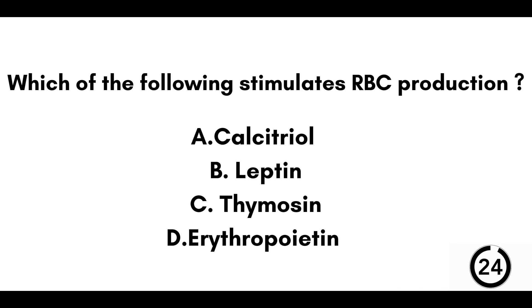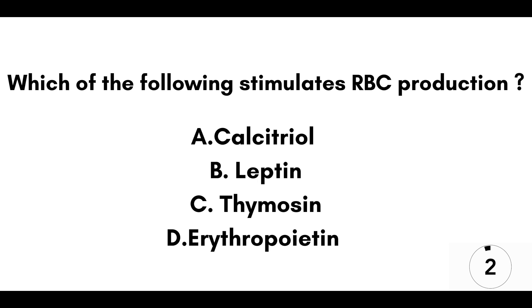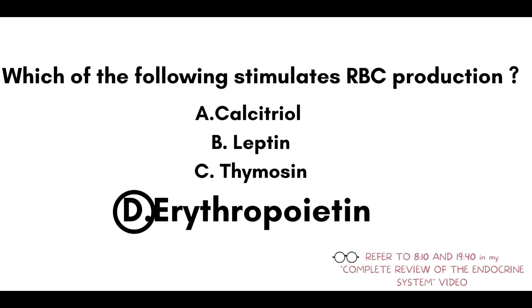Question nineteen: which of the following stimulates red blood cell production? A) Calcitriol. B) Leptin. C) Thymocin. Or D) Erythropoietin. Our answer here is D, erythropoietin.